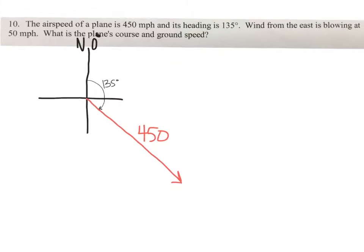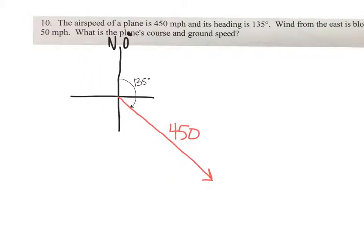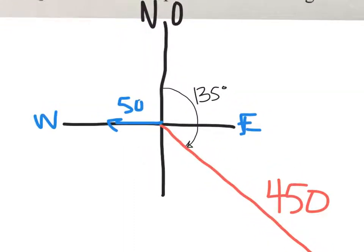Now the wind is from the east so it's blowing to the west. So let's change colors. We go back to the origin and we draw this one 50 going towards the west. So from the east means it's blowing to the west. And this is a 50 here.